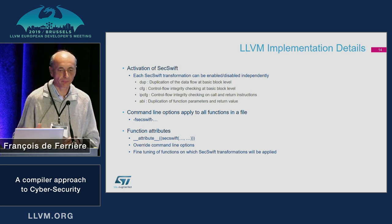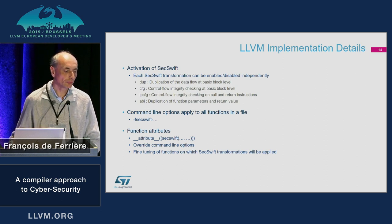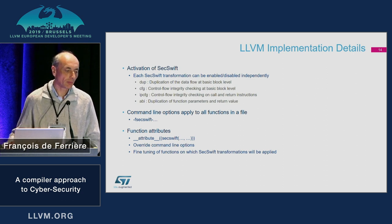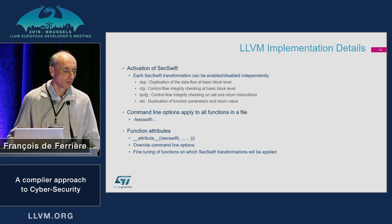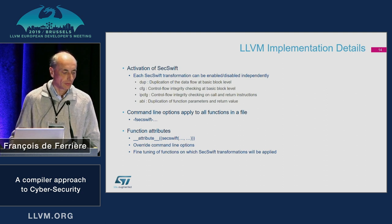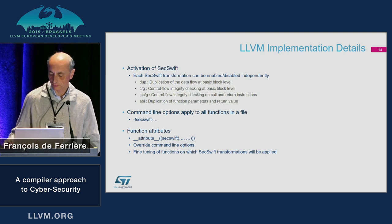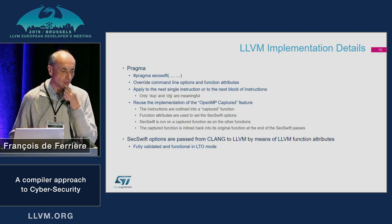SecSwift can be implemented as four different modules: duplication of instructions, control flow graph integrity, inter-procedural control flow graph integrity, and modification of the API. We have command line options that apply to all functions of the file, and we also added some attributes which override the command line options, allowing these transformations to be applied locally to a specific function.